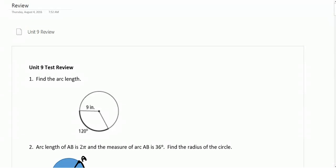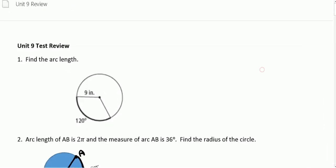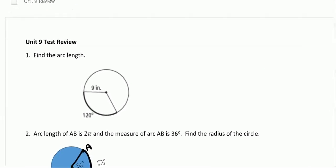This is the unit 9 test review for Honors Math 2. Number 1, we're looking for the arc length of the circle. The measure of that arc is 120 degrees. The radius is 9 inches. And so we're looking for a fraction of the whole circumference.